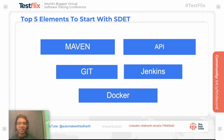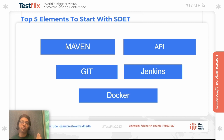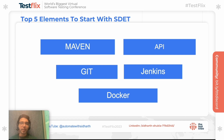Now, if you are an automation QA and want to move to the SDET profile, here are the things you should first focus on: Maven, API, Git, Jenkins, and Docker. You need proper build tool and dependency management knowledge — that's Maven — so that whenever you create a solution or try to understand a dev package, you're equipped. Second is API, which is very important.